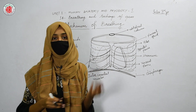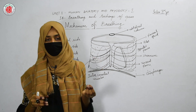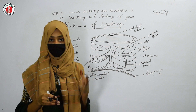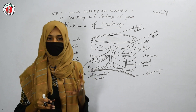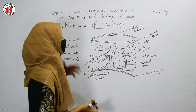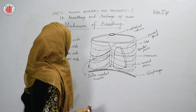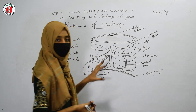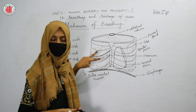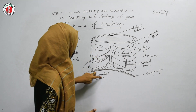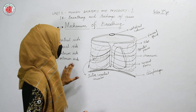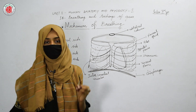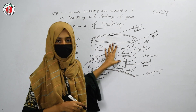In science we need to learn many difficult terms. Whenever the word 'hepato' comes, think about the liver; whenever 'gastro' comes, it is about the stomach. Likewise, if you find the word 'costal,' you should think about the ribs. The muscles present in between the two ribs are called intercostal muscles. The contraction of intercostal muscles and the diaphragm causes the process called inhalation.